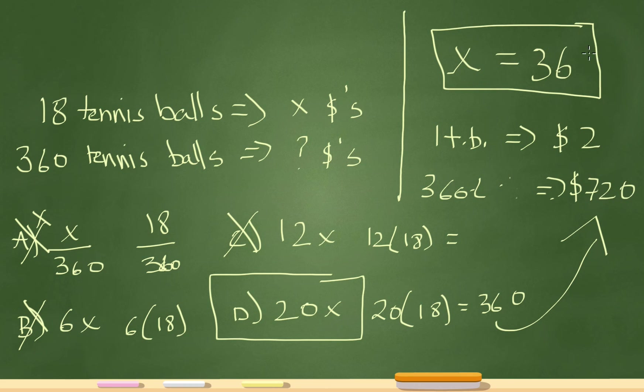Now again, if I plug this 36 back in into all my answer choices, I'm going to be looking to see where I get 720. Let's go to answer choice A. Answer choice A now should be 36 divided by 360, which is 1 tenth. So let me just fill that in. So that won't work out either.